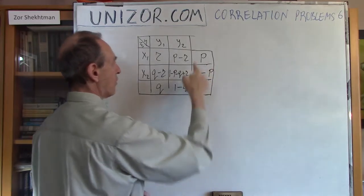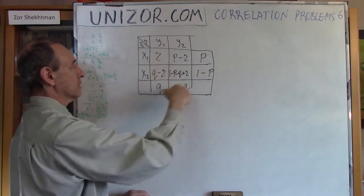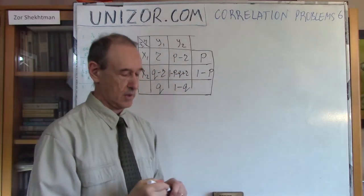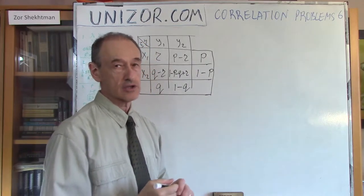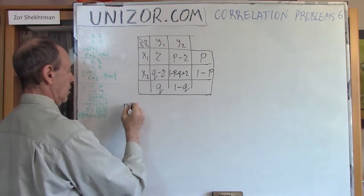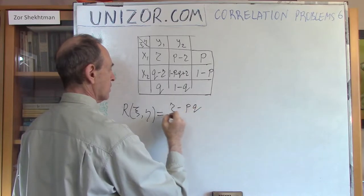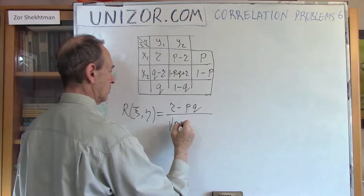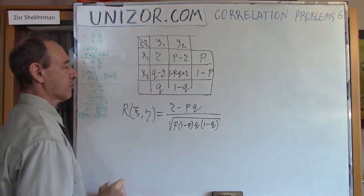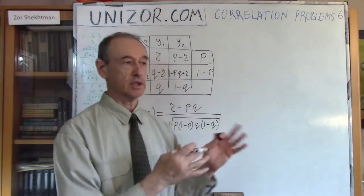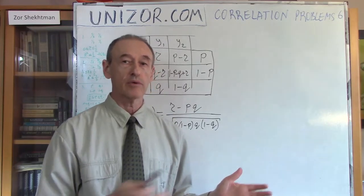This table contains not only the probabilities of xi and eta taking corresponding values x1, x2, y1, y2, but also the probabilities of their mutual values. Based on this — referring to the previous lecture — I have calculated the correlation between these two variables. The correlation between xi and eta equals r minus pq, divided by the square root of p(1 minus p) times q(1 minus q). So that was the formula.